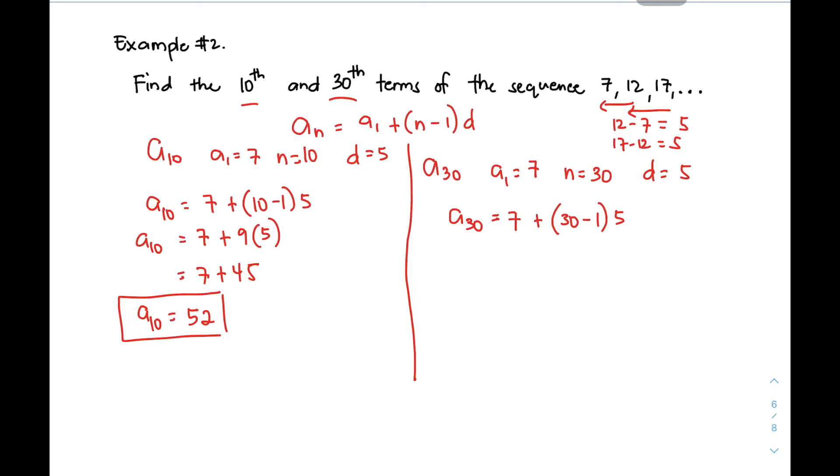Again, your a₁ is 7. Your n = 30 minus 1 times 5, your common difference. Simplify lang natin. a₃₀ = 7 + (29)(5). This is 7 + 145. 29 times 5 is 145. And then your 30th term for the given sequence is none other than 152. That's it. That is the 10th term and the 30th term of the sequence 7, 12, 17.